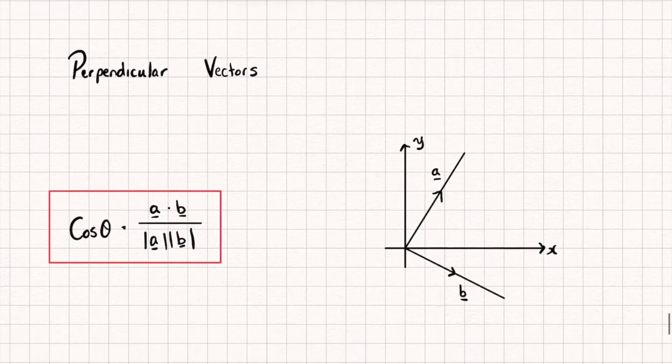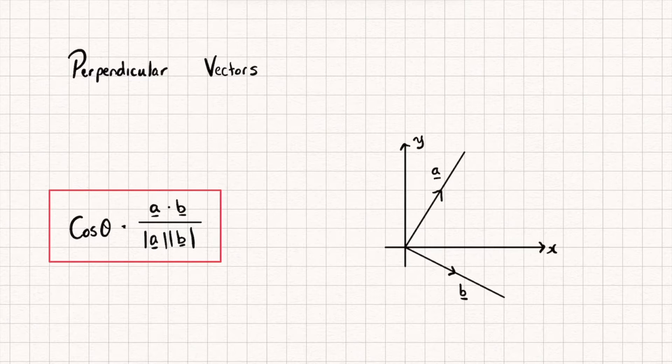So in this red box I have the dot product or the scalar product where I've rearranged this to make cosine theta the subject. Now let's remember that theta is the angle made between our two vectors, so in this diagram this angle here would be theta.